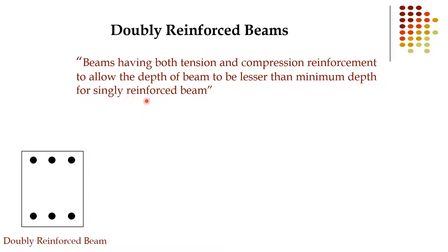When we design a singly reinforced beam we follow the minimum effective depth criteria — strict guidelines must be followed. But in a doubly reinforced beam there are no such strict guidelines; we can go below the minimum depth. For example, if the minimum depth for a singly reinforced beam is 300 mm, for a doubly reinforced beam we can go to 250 mm or even 225 mm. That is the main benefit of doubly reinforced beams.